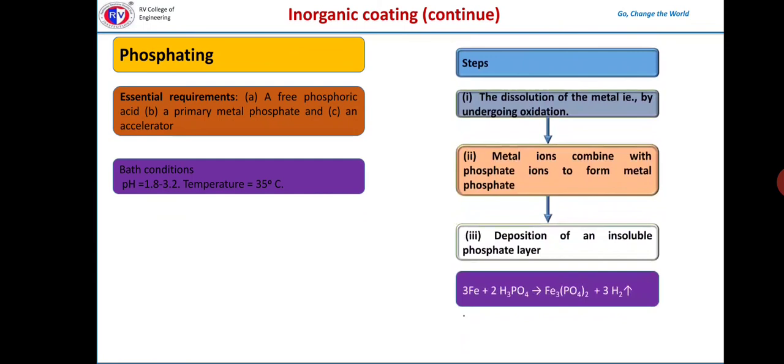The reaction when iron is used as a metal: iron reacts with the phosphoric acid to form respective phosphates along with the liberation of hydrogen.